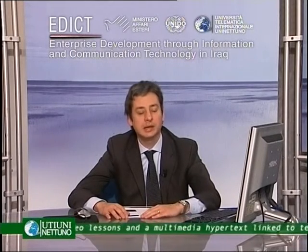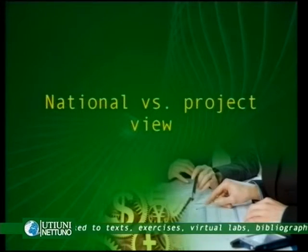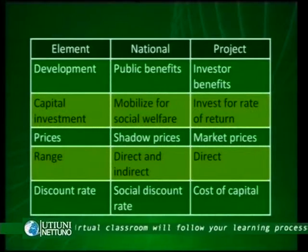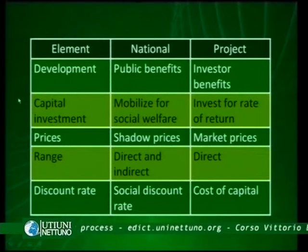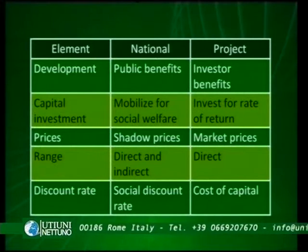We can now summarize what we have said by looking at the difference between the national versus the project view. As we have understood, there is a difference between financial and economic analysis because the two are based on different perspectives — different objectives, different parameters, different criteria — and they imply a different view, which is clearly broader in the case of the national decision-maker and narrower if we look just at the project and its direct returns. In this table we look in detail at the difference between the national view and the project view.